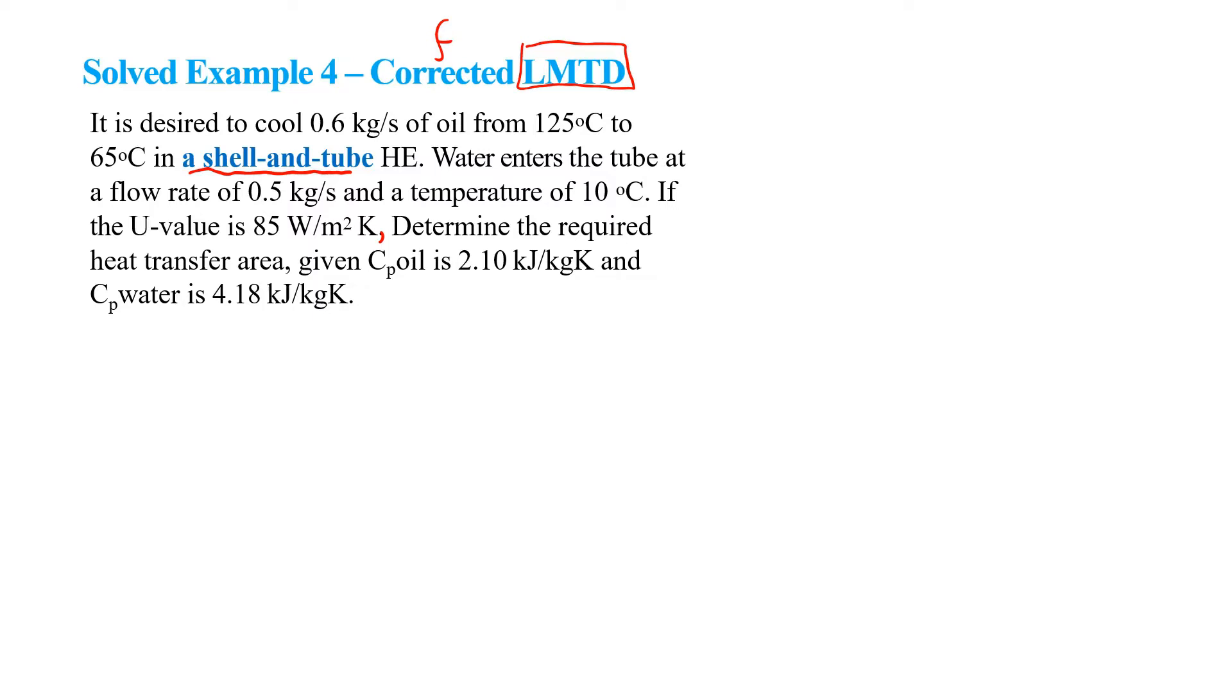The method is the corrected LMTD method. The general process is the same except that we need to find out the F factor. In LMTD method, we have Q equal to UA times LMTD, where U is the overall heat transfer coefficient. This is only applicable for double pipe heat exchanger. When it is not double pipe heat exchanger, we need to add one factor which is F. F is the correction factor.